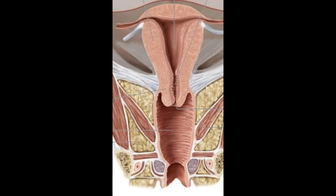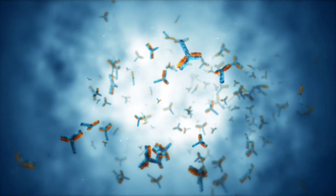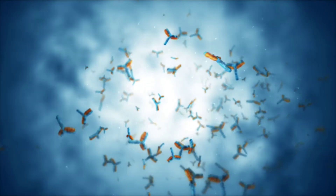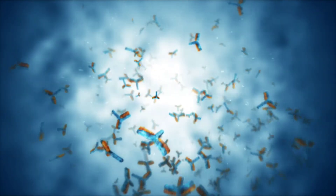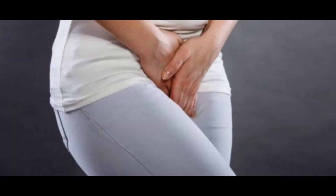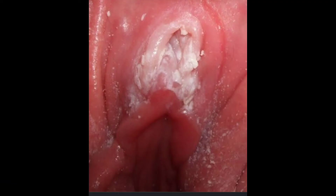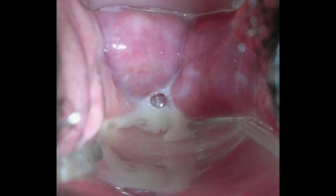This hyphae secretes enzymes that degrade the epithelial cells lining the vagina and penetrates the tissue. When the vaginal tissue is penetrated, the immune system rushes to the site, generating some of the symptoms of yeast infection like itching, burning sensation, redness of the vagina, and swelling.